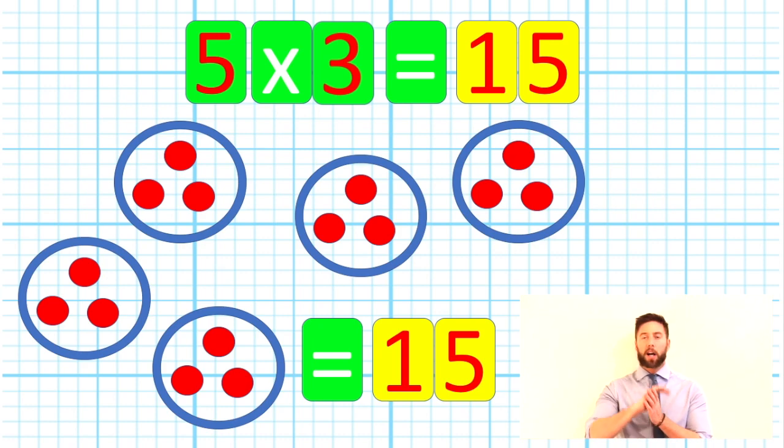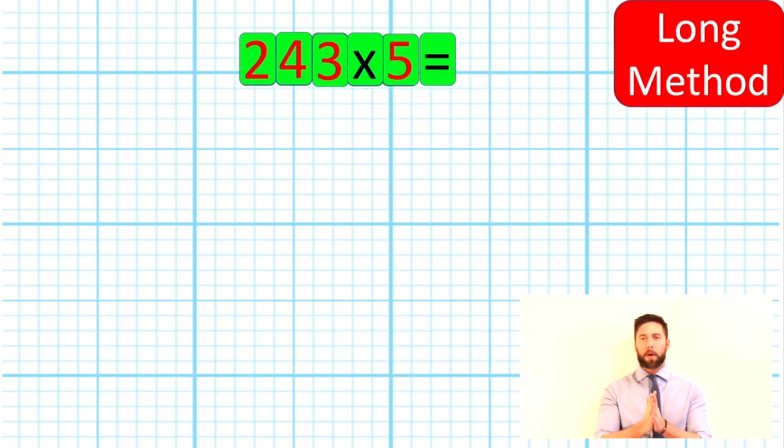That is very important when we come into working on harder questions. We need to understand that it doesn't matter which way round we do things, we can always get the same answer as long as we multiply every part of our question. So let's have a look at a bigger number. I'm going to have a look at 243 multiplied by 5.